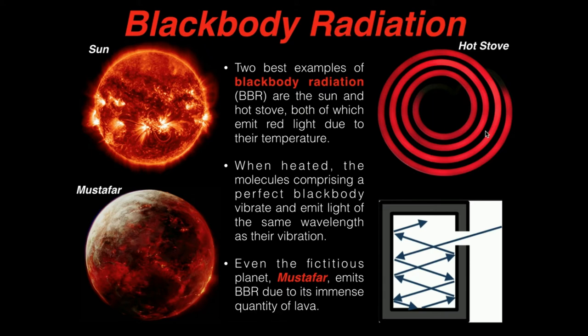That's an example of blackbody radiation. If something gets to a really high temperature, the individual molecules that comprise that object start to vibrate very fast, and that vibration causes the emission of light. So this appears red.